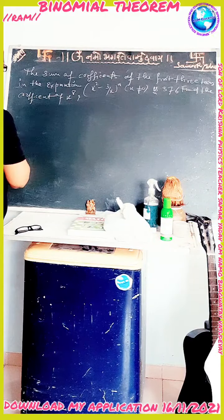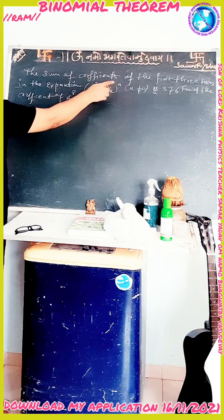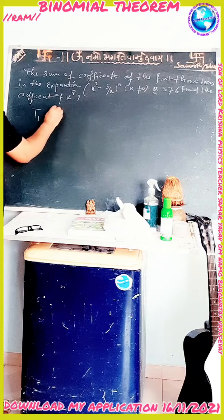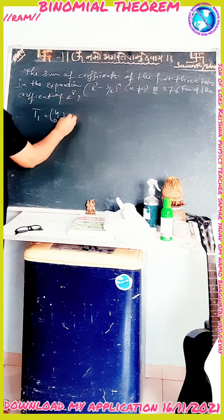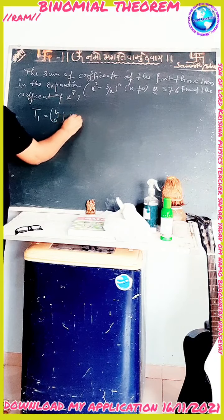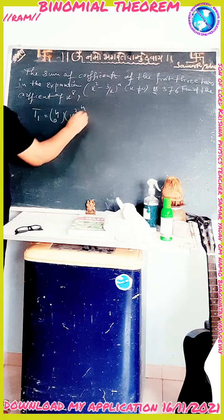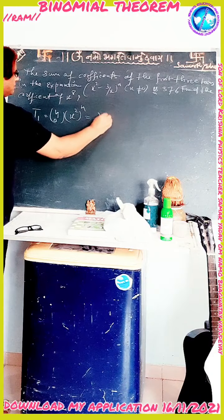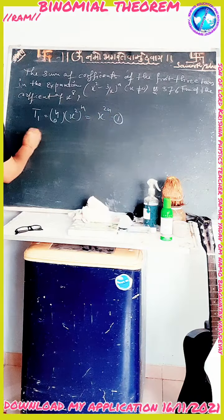Here we will find the first three terms. T1 is equal to nC0 · (x²)^n, which equals x raised to 2n. This is term number 1.